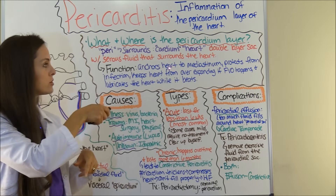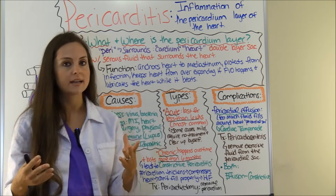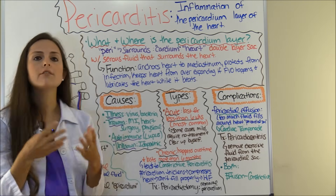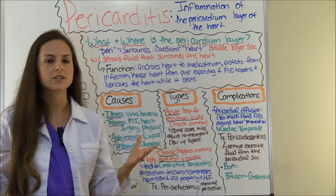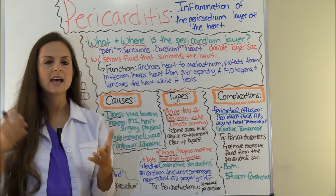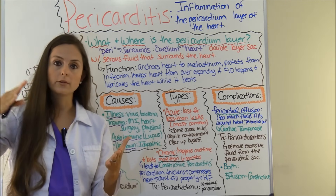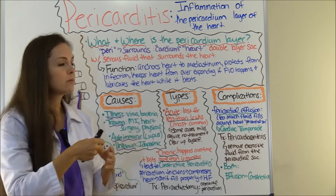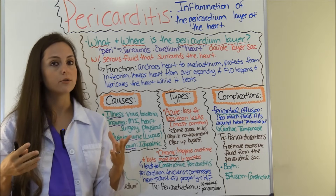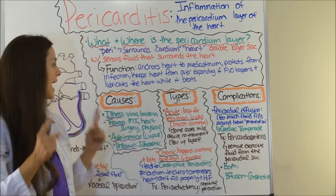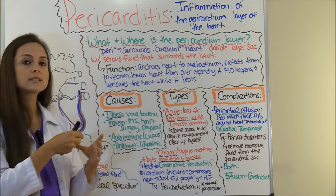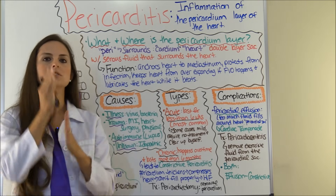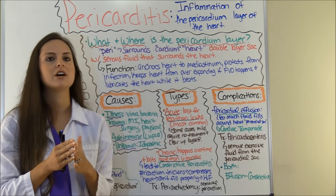The pericardium anchors the heart to the mediastinum. It also protects your heart from infection — for example, if you get a lung infection, that protective layer prevents the infection from transferring from your lungs to your heart. It keeps the heart from over-expanding when the patient is experiencing fluid volume overload, and it lubricates the heart while it beats so those two layers don't rub up against each other.